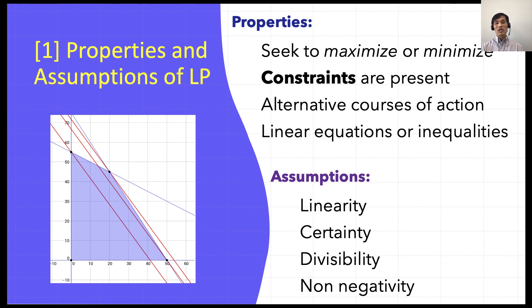The fourth assumption is non-negativity. In linear programming problems, we assume that all answers or variables are non-negative. Negative values of physical quantities are an impossible situation. Another example would be negative person. We have positive one to three persons, but there's no negative one person or negative two persons. You simply cannot produce a negative number of clothes, furniture, or computers, etc.